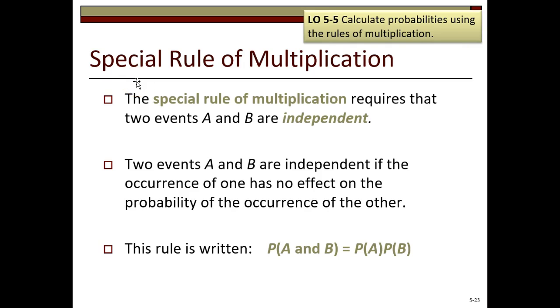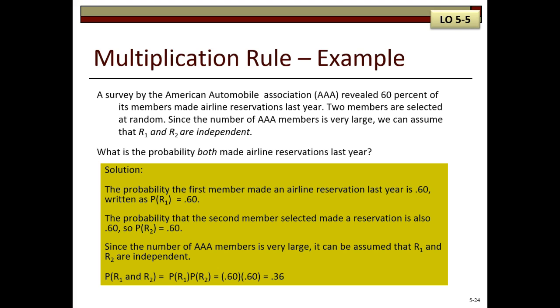Now let's look at the rules of multiplication. We're going to start with a special rule of multiplication. It requires that two events are independent, and they are independent if the occurrence of one has no effect on the probability of the occurrence of the other. And it's written as the probability of A and B equals the probability of A times the probability of B.